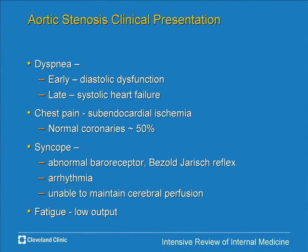Dyspnea is a very common presentation — it can occur early due to diastolic dysfunction and later from systolic heart failure, which is commoner in men. Chest pain is also common even with normal coronaries, because the thick ventricle has a limited, relatively fixed cardiac output, causing subendocardial ischemia — angina can occur in up to 50% of patients. Syncope results from abnormal baroreceptor responses, arrhythmia, or inability to increase cardiac output during exercise, causing cerebral malperfusion. Fatigue from low output is also very common.